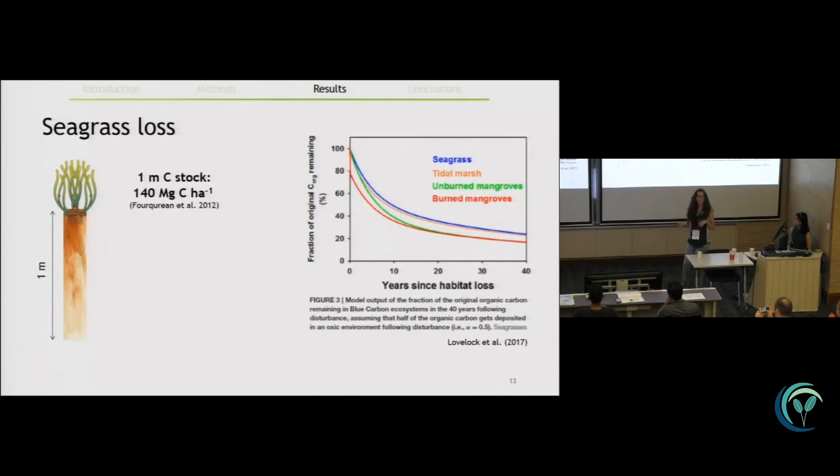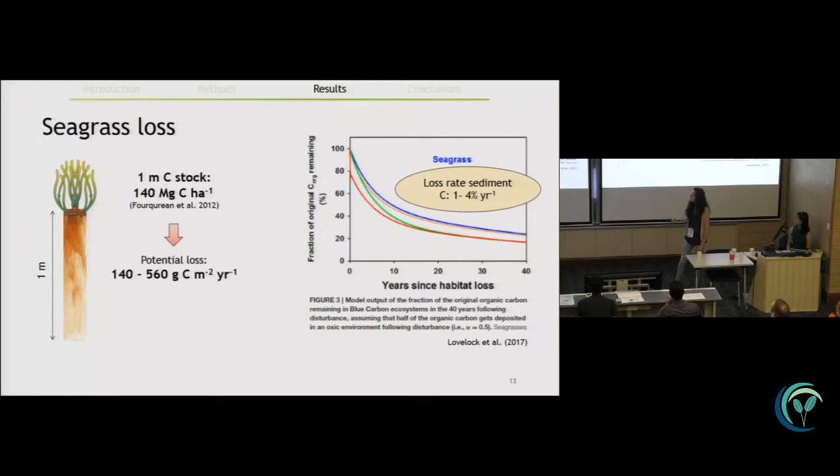In one article that was published recently, Lovelock et al. modeled in 2017, modeled the carbon loss in seagrass ecosystem if these systems were disturbed. So, they estimated that for seagrass, the loss rate of the sediment carbon was about 1-4% each year. So, if we take this estimate, we will be looking at the potential loss of carbon that is between 10 and 30 times higher than the rate that this carbon was buried.